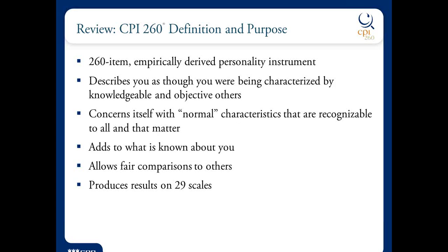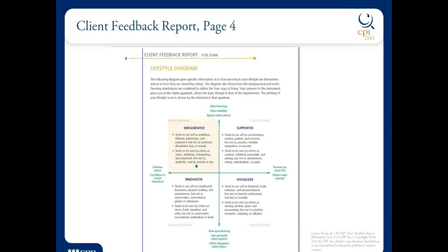The first place we start when looking at a person's results is at their CPI type. There are four of them: implementers, supporters, innovators, visualizers. They are defined by two big picture or lifestyle scales. The first scale is that horizontal scale, which is basically an externality/internality scale. Moving from left to right, everyone falls on that continuum somewhere. Those who fall towards the left move towards people; those who fall towards the right tend to pull back from people. It's a major theme on the CPI.